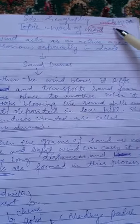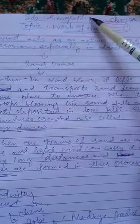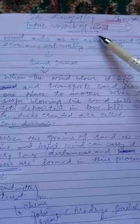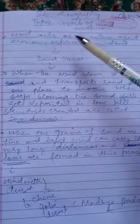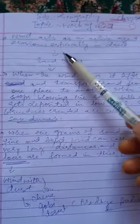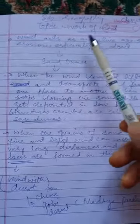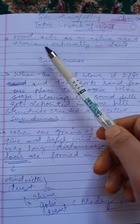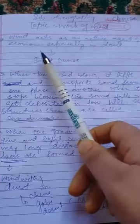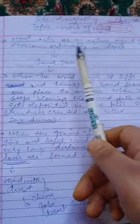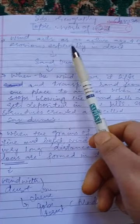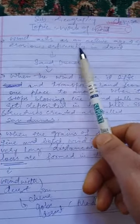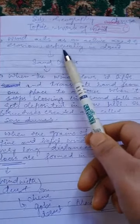Dear students, class 7th, subject geography, and today our topic is work of wind. Wind acts as an active agent of erosion, especially in desert. It is a moving air which is an active agent of erosion, especially in desert.